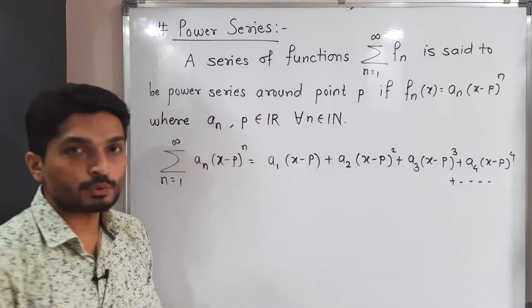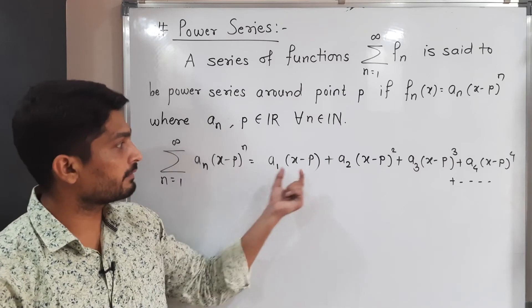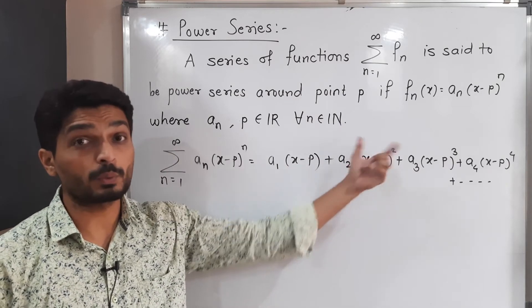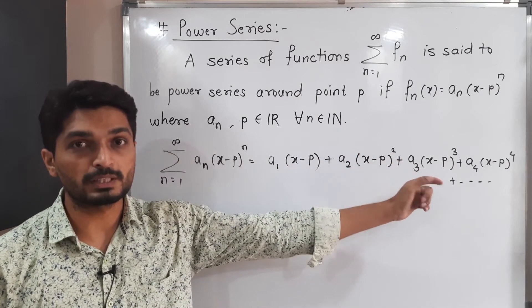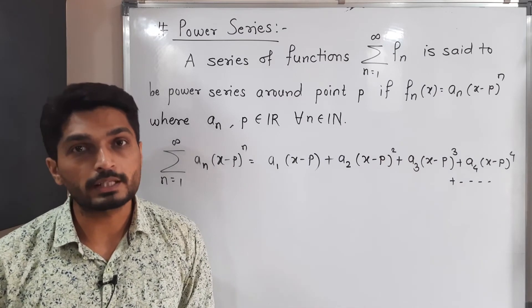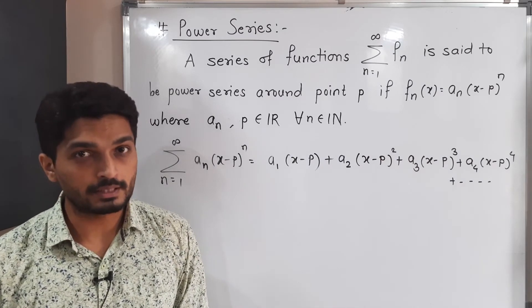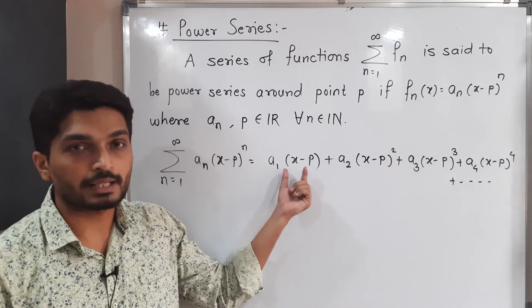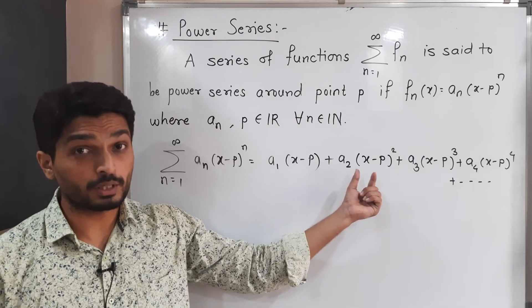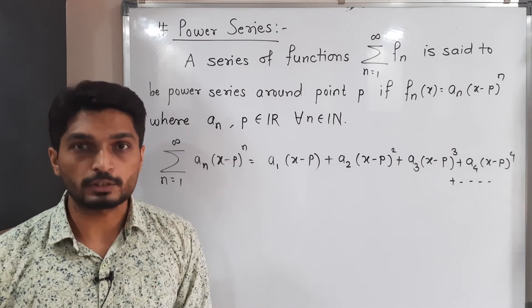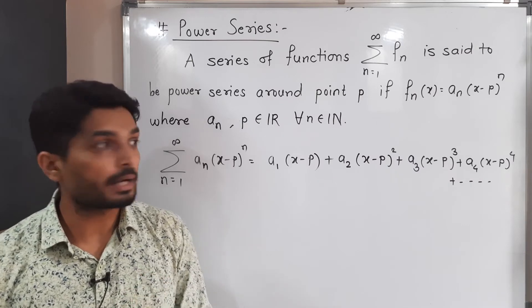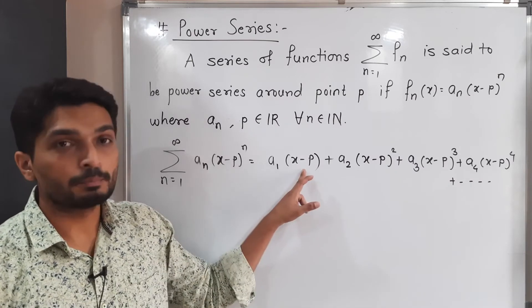You can easily see that we are having powers: (x minus p), (x minus p) squared, (x minus p) cubed. So we have powers — that's why we call it a power series. Also, that bracket (x minus p) is always there, which is why we call it a power series around point p.